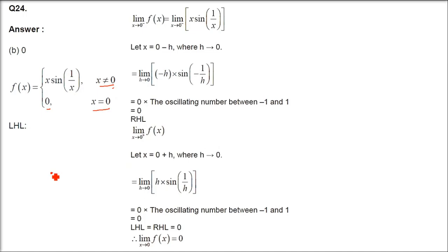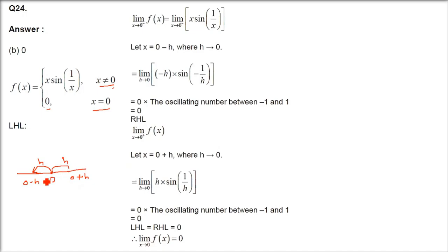We will take the left hand limit and right hand limit and try to find out whether the limit exists or not. 0 is the critical point. We use 0 plus h and 0 minus h, where h is very small — essentially 0. One time we place x = 0 minus h (left hand limit), and one time x = 0 plus h (right hand limit).